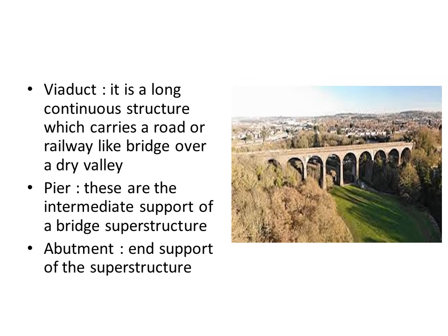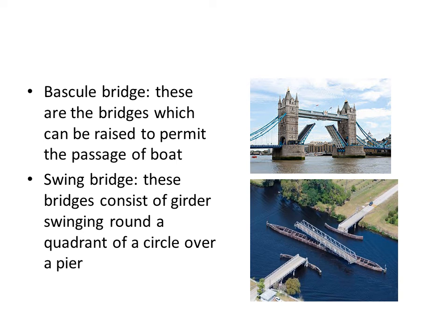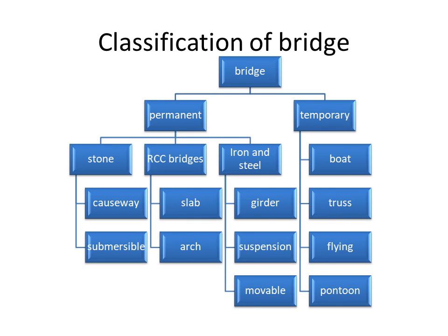A viaduct is a long continuous structure which carries a road or railway like a bridge over a dry valley. Bascule bridges are special bridges which can be raised to permit the passage of boats. Swing bridges consist of a girder which can swing around a quadrant of a circle. In bascule bridges there is an upward movement, and in swing bridges there is movement of the girder around a horizontal circle.